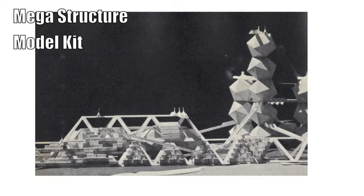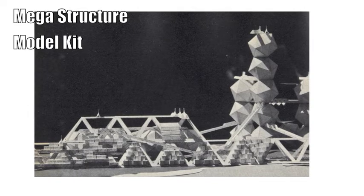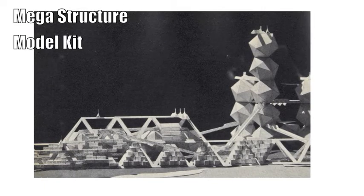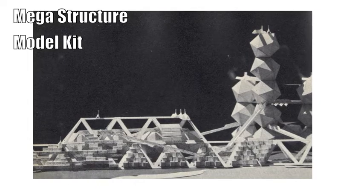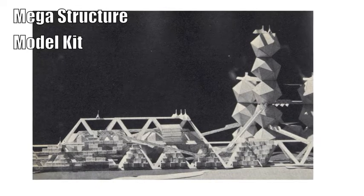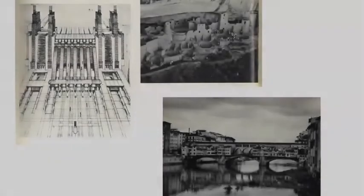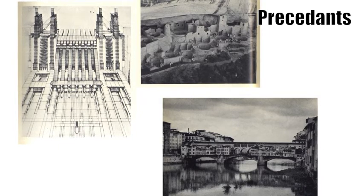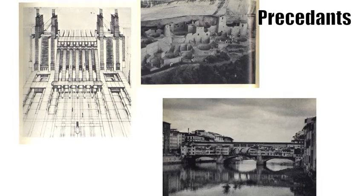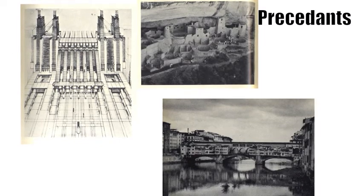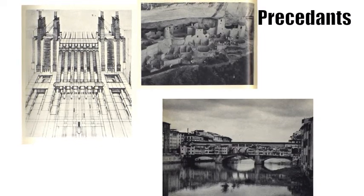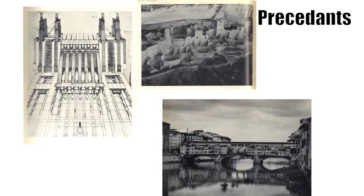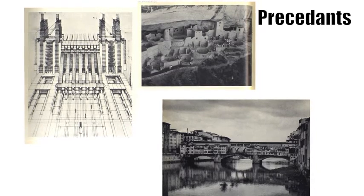The Archigram 1967 Megastructure Model is a complete kit for a do-it-yourself megastructure. According to Rainer Banham, the Ponte Vecchio belongs to the megastructure's canon, with its temporary housing and shops on a multi-level bridge structure. Sant'Elia in 1914 drew the Milan Central Station project, which also had a direct influence on the megastructure movement.